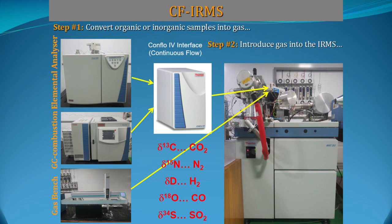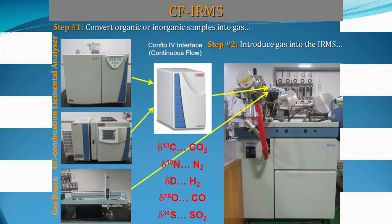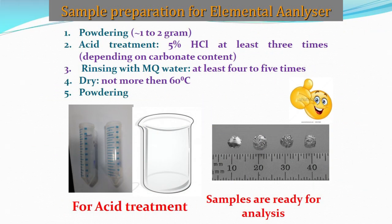We measure the isotopic value of that gas. For CO2 gas we can measure the delta 13C value and delta 18O value. With the help of nitrogen gas we can measure delta 15N. Before the analytical part I would like to give brief information regarding the sample processing technique, as for each peripheral part the sample preparation technique is different.